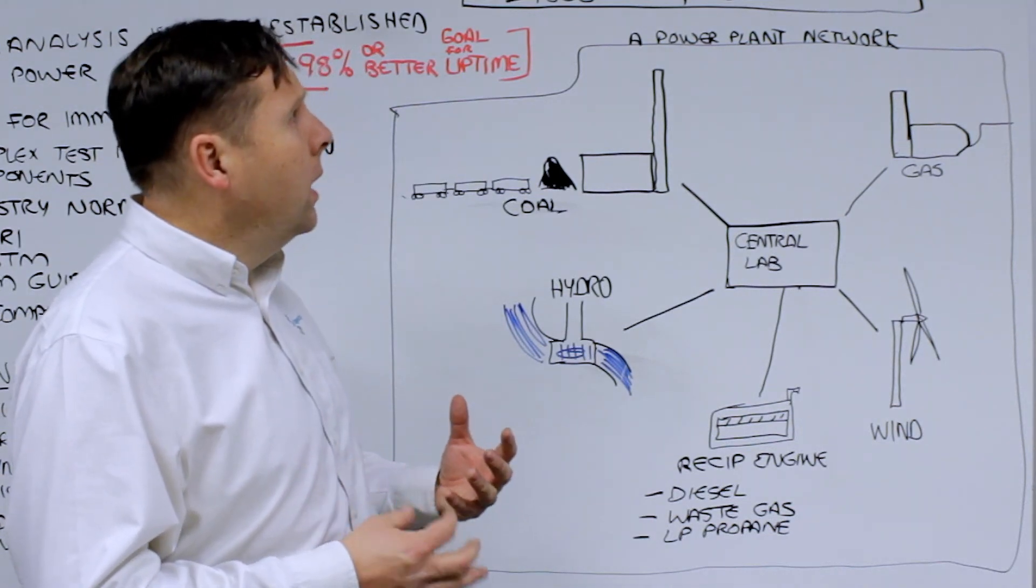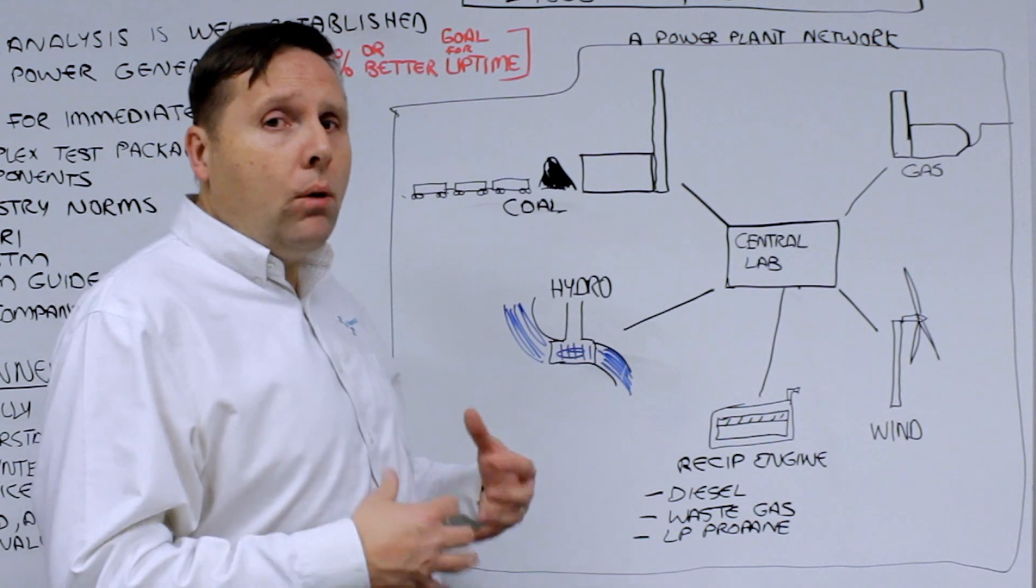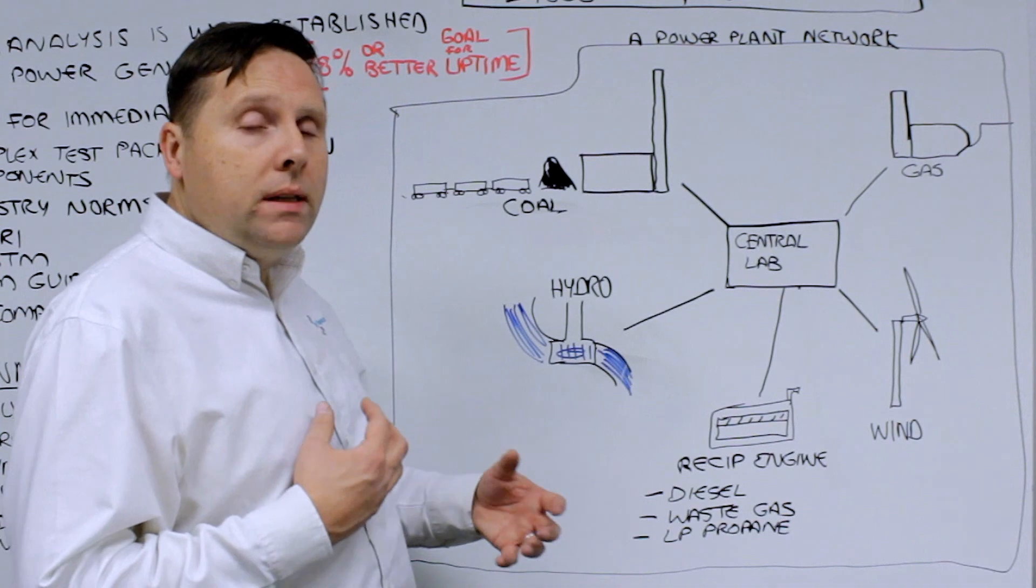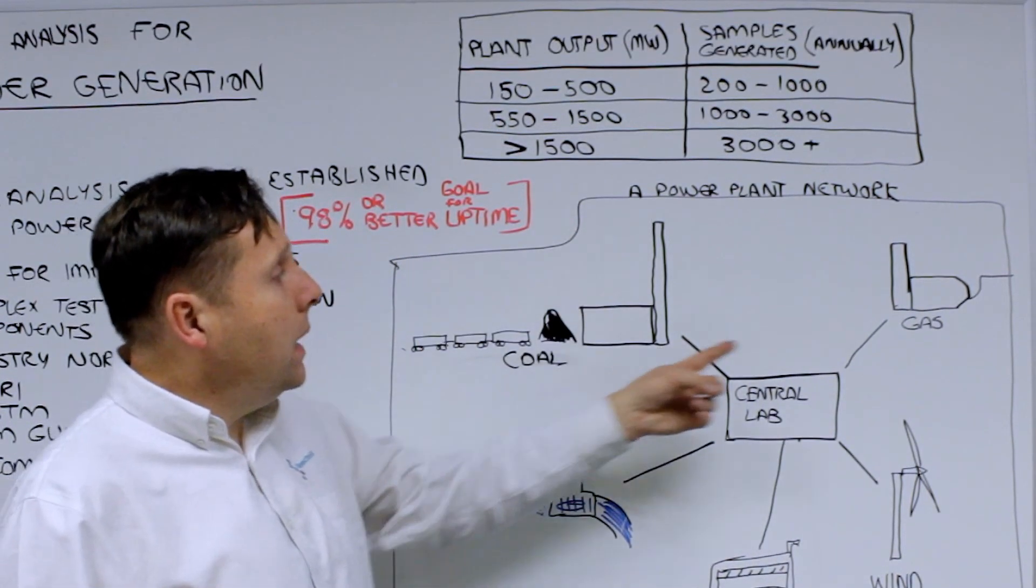A general rule of thumb is that the plant output, if somebody was considering how big an oil analysis program should be for an on-site application, a good rule of thumb is look at the output.